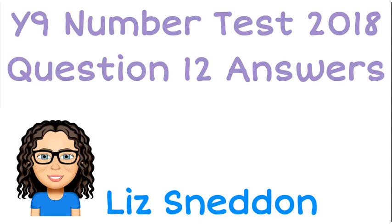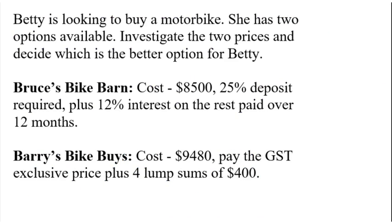Let's have a look at question 12. So Betty is looking to buy a motorbike. She's got two options here.